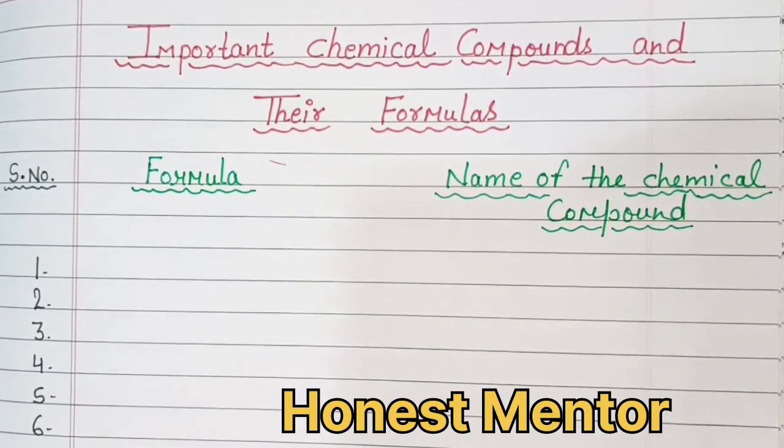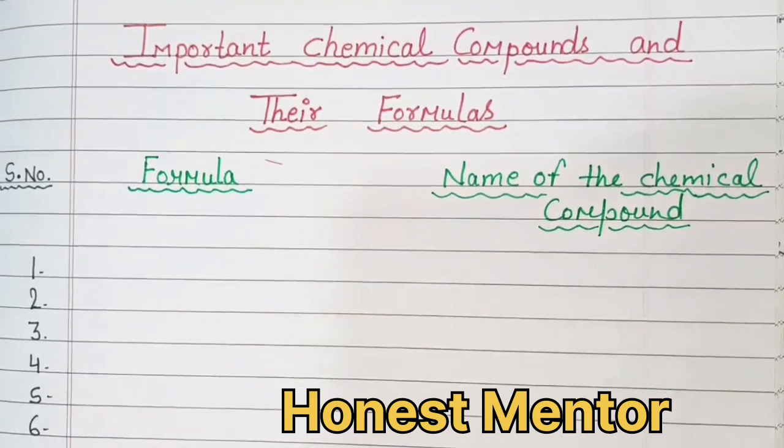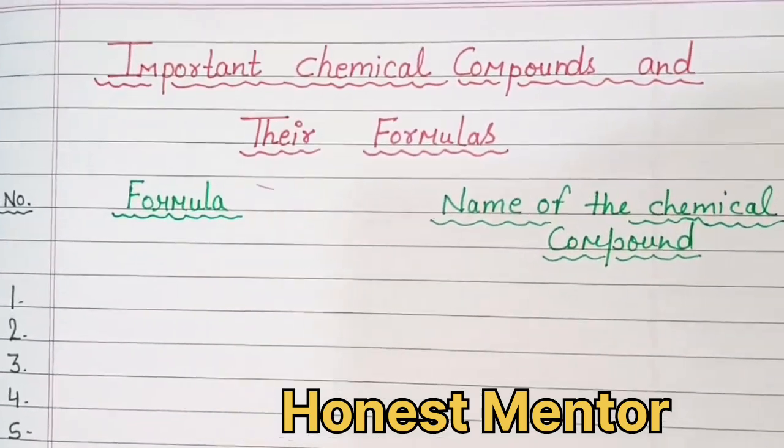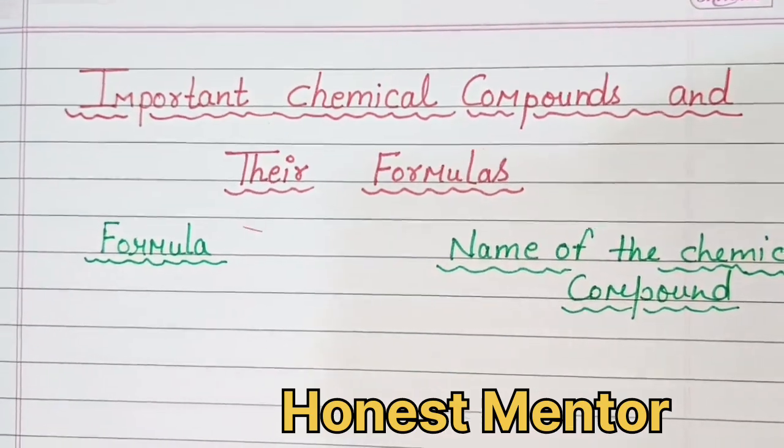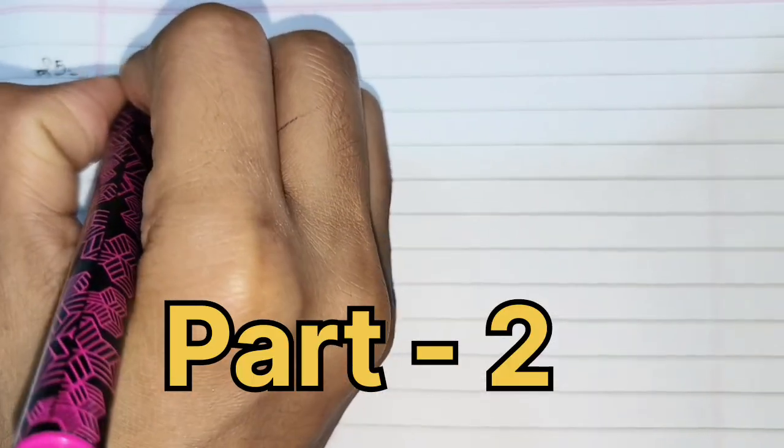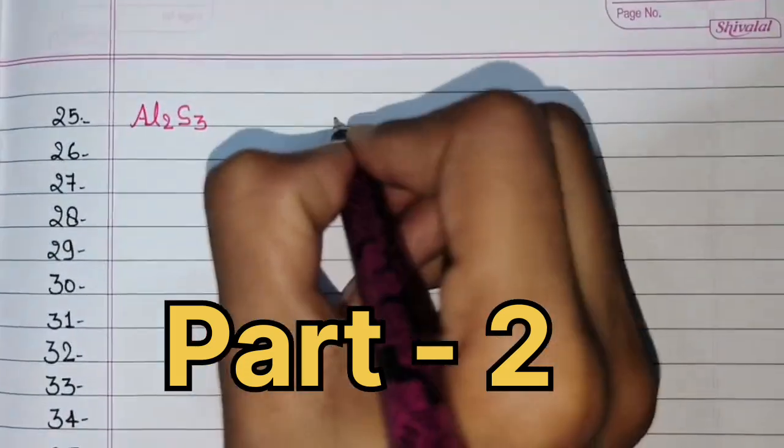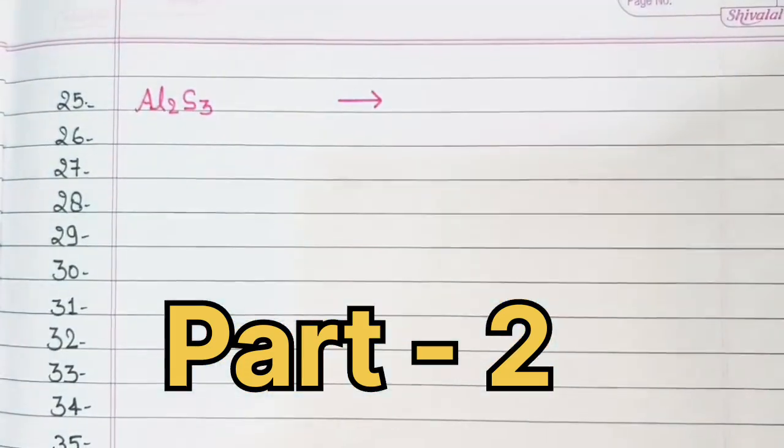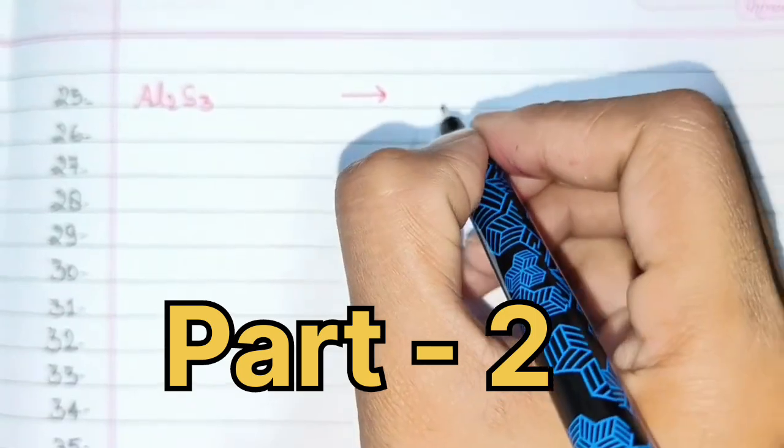Hello everyone, welcome to my channel Honest Mentor. Today we are going to learn about important chemical compounds and their formulas. Al2S3, Aluminum Sulfide.